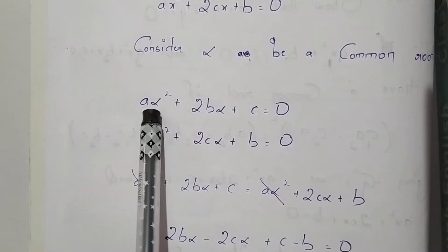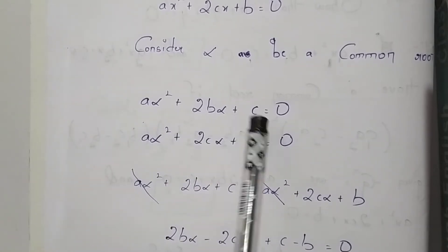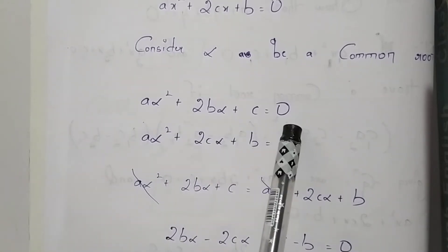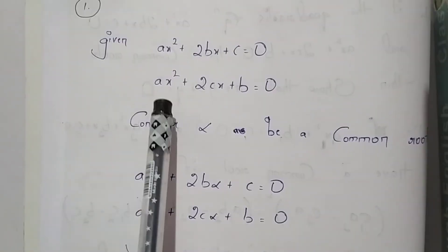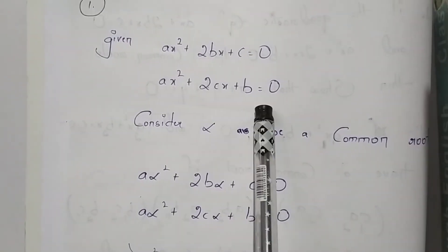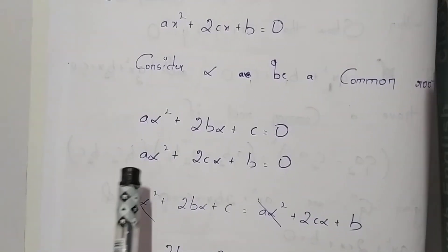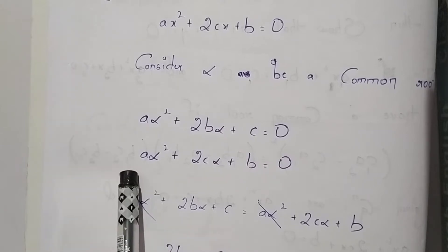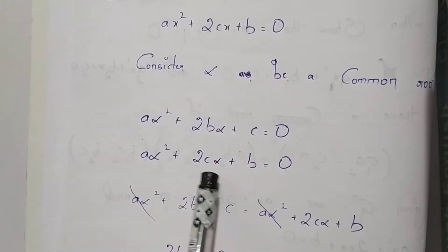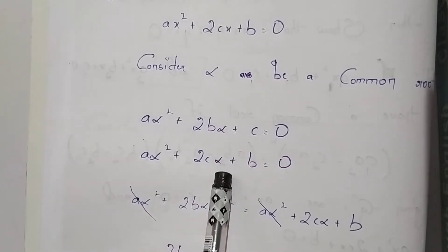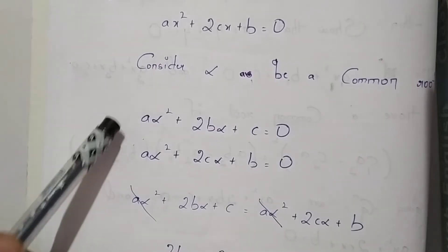a·α² + 2b·α + c = 0. On substituting the value of alpha in the second equation, we will get a·α² + 2c·α + b = 0.